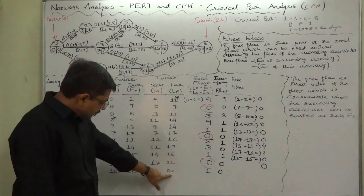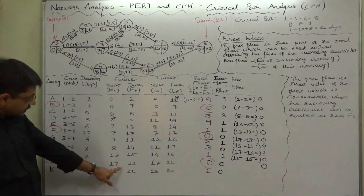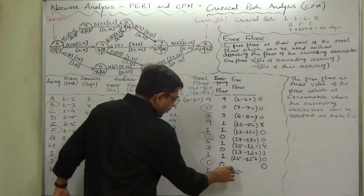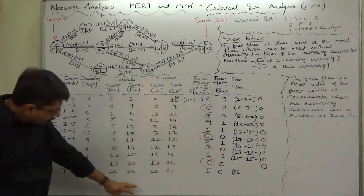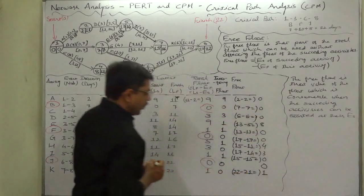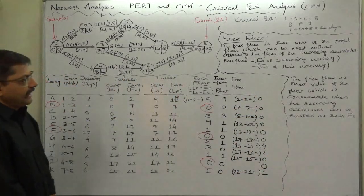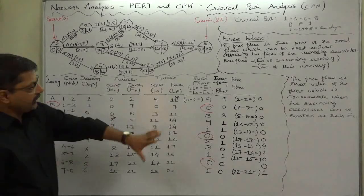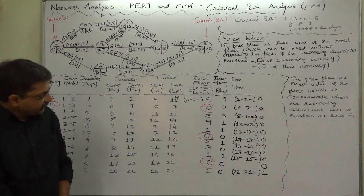For activity K, it also has no succeeding activity. The project is completed by virtue of J's completion time at 22 days, and K's earliest finish time is 21. So 22 minus 21 equals 1. These are the amounts of time by which we can delay each respective activity without affecting the floats of their succeeding activities — and this kind of float is known as free float.